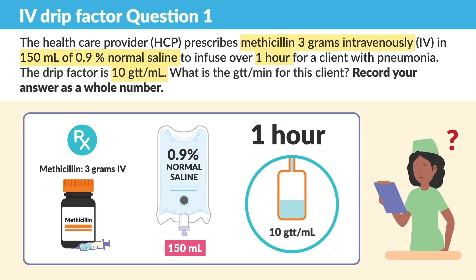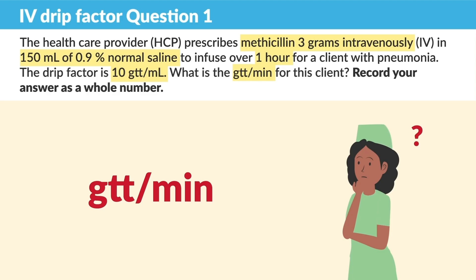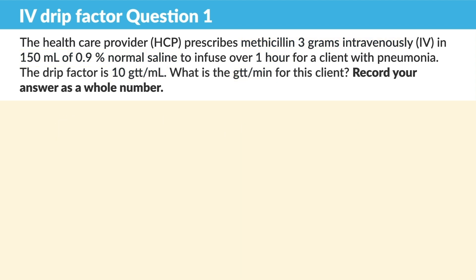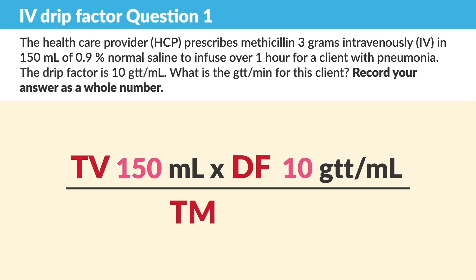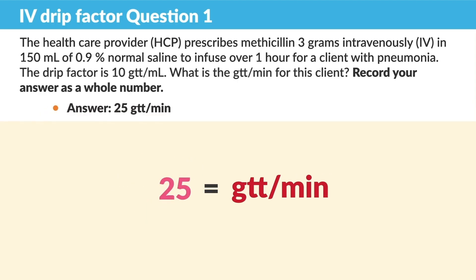Focus on what you're calculating for — in this problem you are calculating GTTs per minute, basically drops per minute, so your answer should always be recorded as a whole number. Let's set up the equation. Remember: TV makes you deaf over time. TV is the total volume, DF is the drip factor, and time is 60 minutes — not one hour, because one hour is for a pump. So we have 150 mLs for total volume, 10 is the GTT, over 60. When we multiply the top row we get 1,500 over 60, then we do simple division, and it's 25. The correct answer is 25 drips or drops per minute.